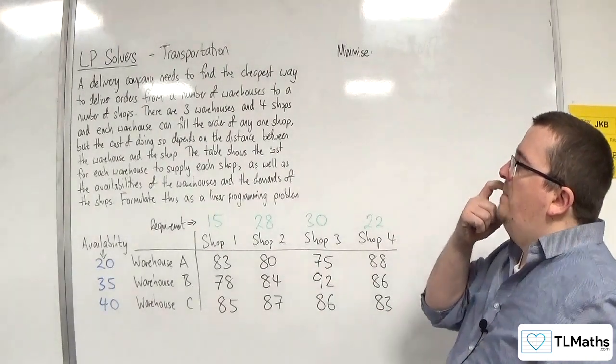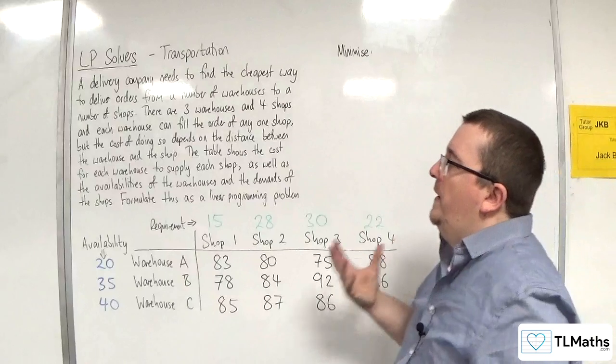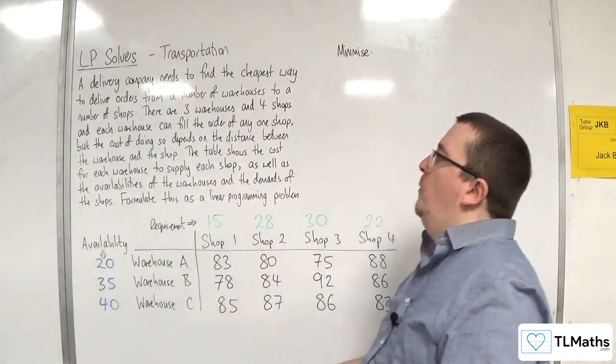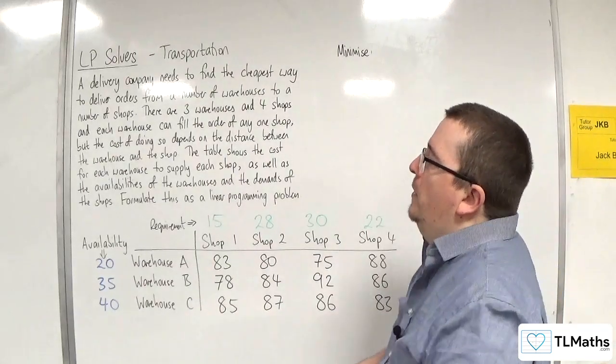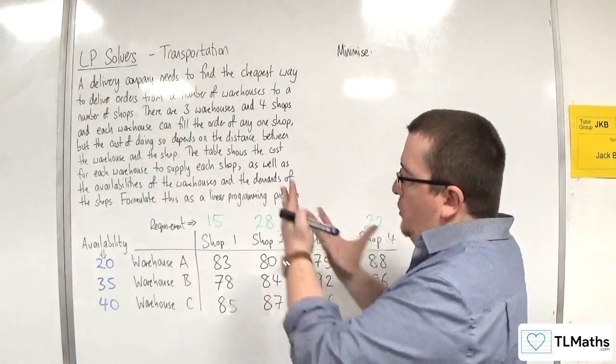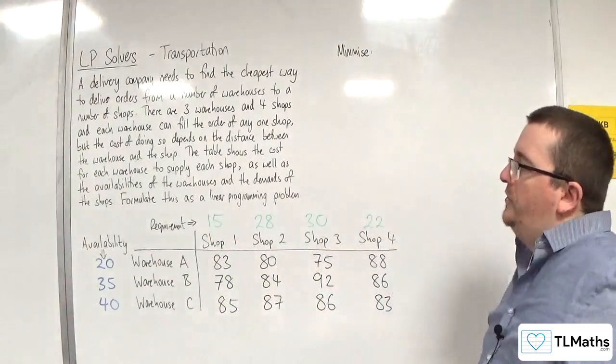The table shows the cost for each warehouse to supply each shop, as well as the availabilities of the warehouses and the demands of the shops. We need to formulate this as a linear programming problem. So let's look at this table so we can really understand what it means.